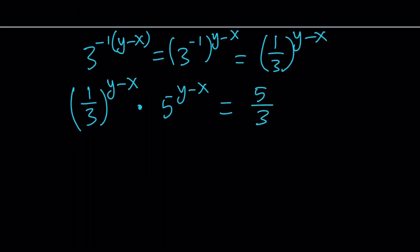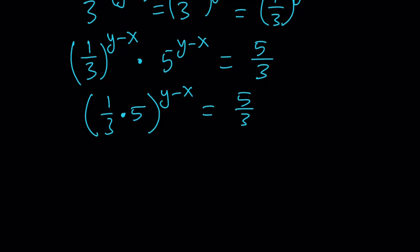So what I can do is multiply the bases, 1 over 3 times 5, and then use a common exponent. On the right-hand side, I have 5 thirds. Now I'm going to simplify this. Multiply 1 third by 5. That gives you 5 over 3 to the power y minus x equals 5 over 3.